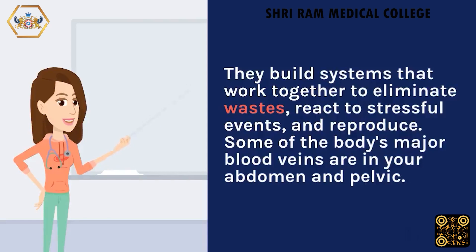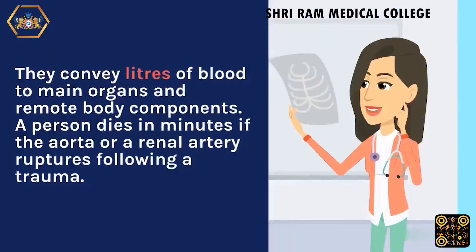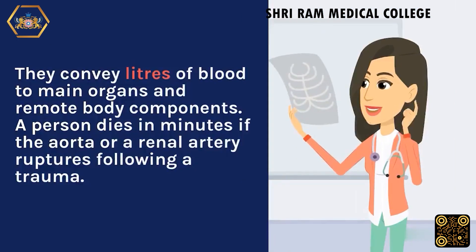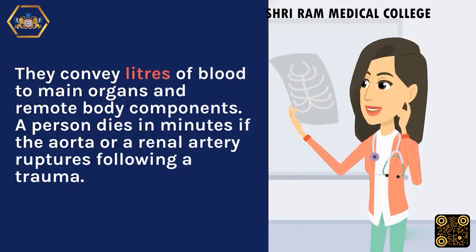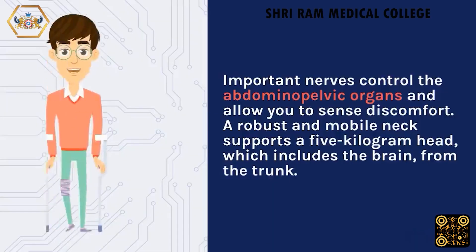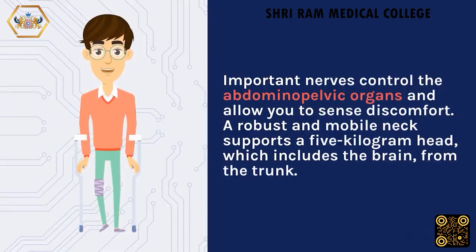Some of the body's major blood vessels are in the abdomen and pelvis. They convey liters of blood to main organs and remote body components. A person dies within minutes if the aorta or a renal artery ruptures following trauma.